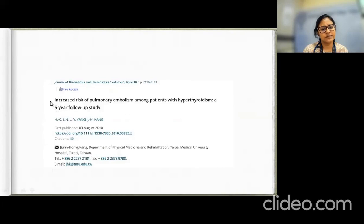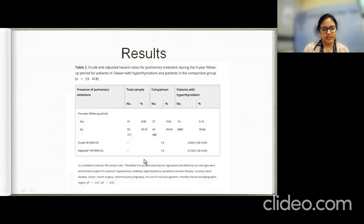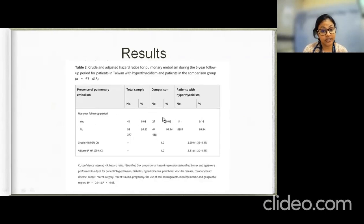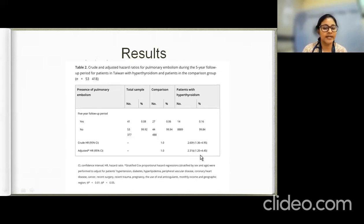A 2010 retrospective case-cohort study examined the risk of pulmonary embolism among patients with hyperthyroidism, following patients from January 2001 to December 2003 over a five-year follow-up. The incidence of PE was 0.06% in those without hyperthyroidism versus 0.16% in those with hyperthyroidism, with a crude hazard ratio of 2.60 and an adjusted hazard ratio of 2.31 (95% CI: 1.20–4.45).